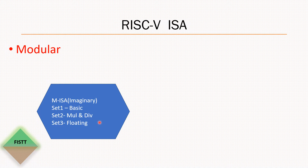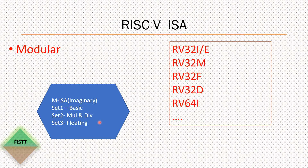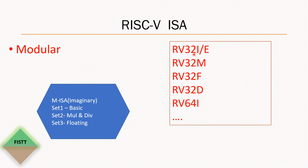Now let's see how this concept applies to RISC-V. In RISC-V, the ISA naming convention works as follows: 'RV' stands for RISC-V, followed by the width of the address. The instruction sets are called instruction set extensions, and each extension is associated with an English alphabet. 'I' stands for integer, 'M' stands for multiplication and division, and 'F' stands for single precision floating point instructions.